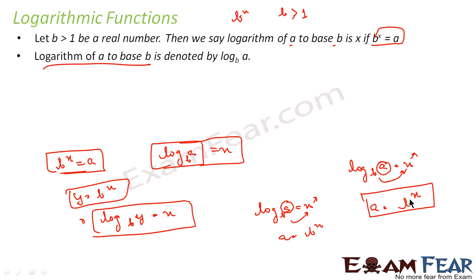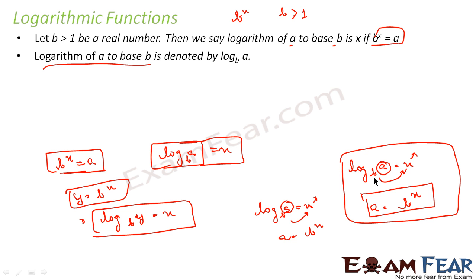Log a to the base b is nothing but x. We'll do some more questions on logs so you'll be more comfortable. If b^x = a, or equivalently log of a to the base b = x, then a is nothing but b to the power x. Try to remember that.